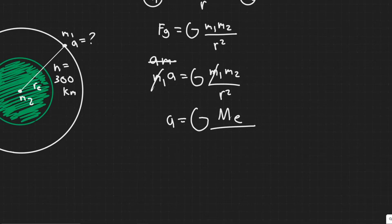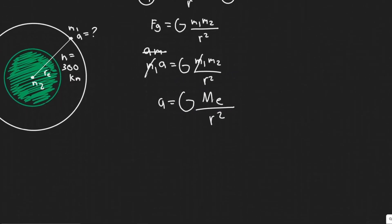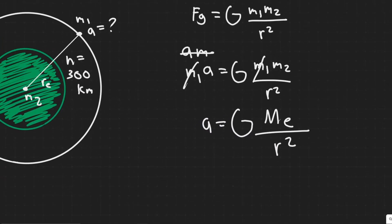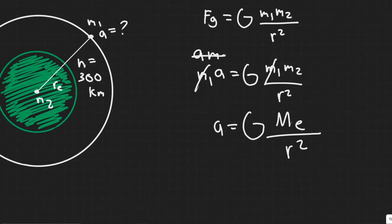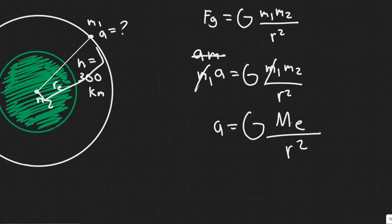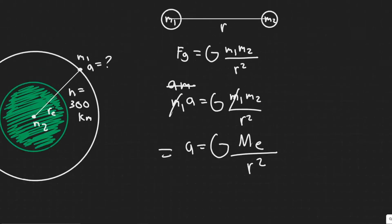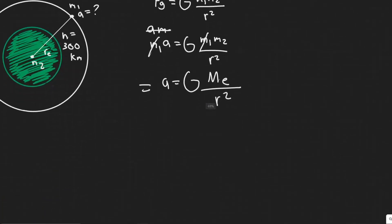So we can write this as G times Me, the mass of the Earth, divided by r squared, where r is the distance between them. That's essentially how you derive this formula, and you can use it for any planet. If you want to find the acceleration experienced by an astronaut near any planet, you have G times the mass of that planet divided by r squared, where r is their distance from the center of the planet. This is the main formula we're going to use.